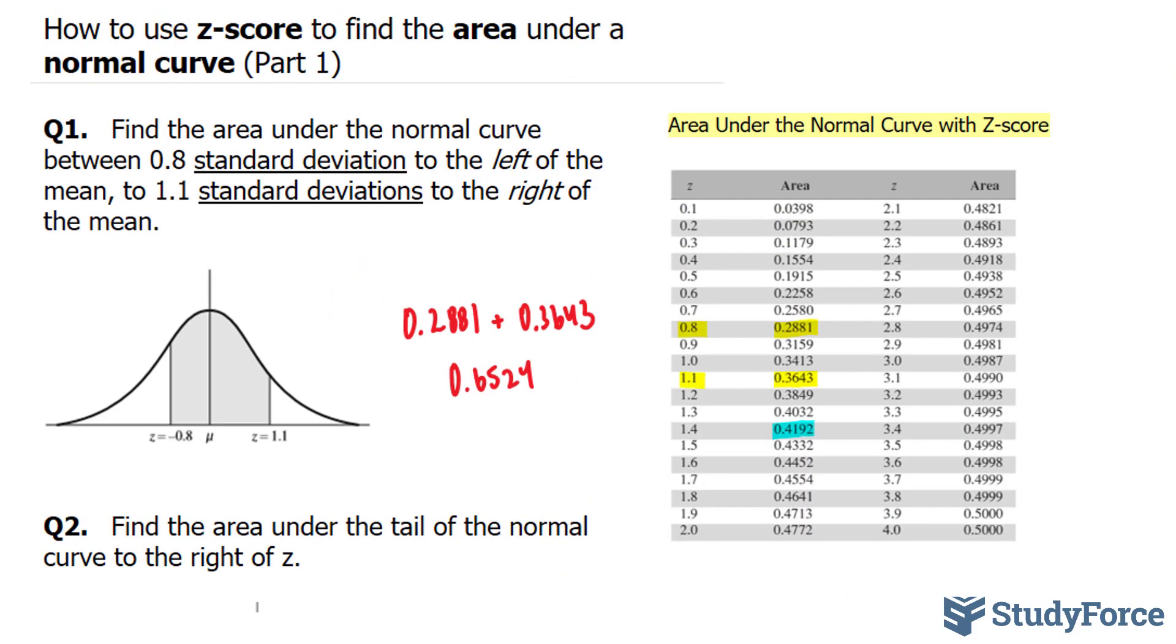And so there you have it. That is how to use z-score to find the area under a normal curve.